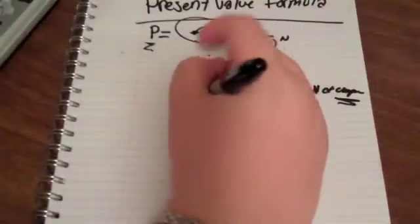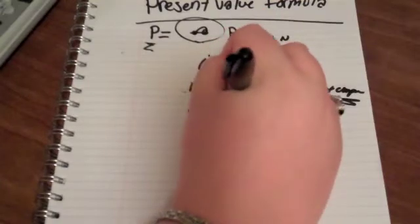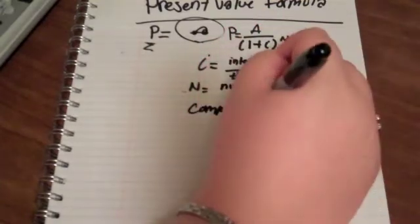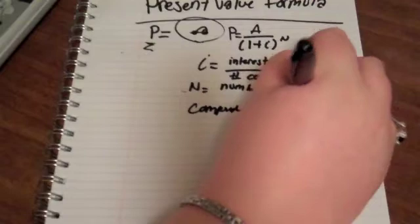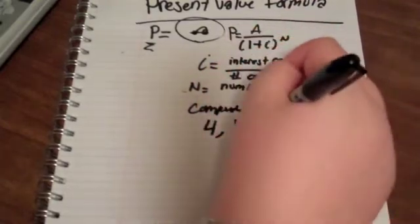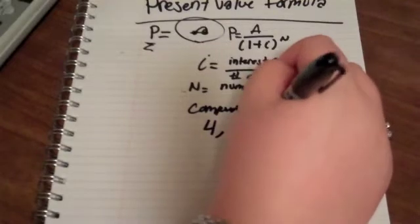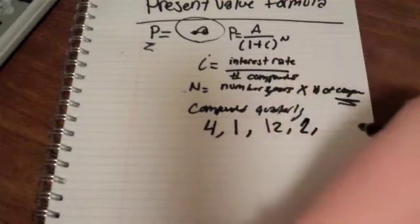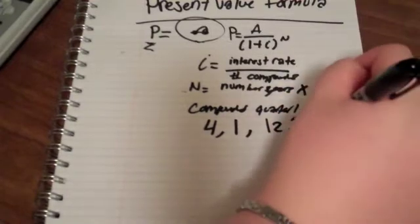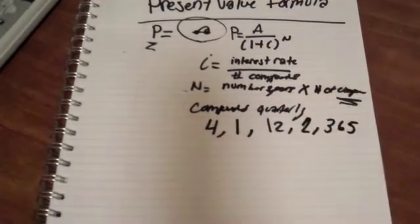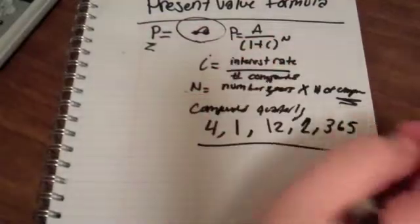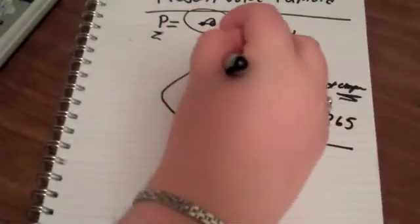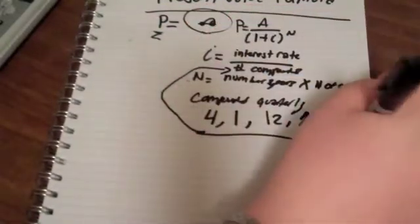So, compounds is what they would tell you. They would say it's either compound quarterly, which would be four. Compounded yearly, which is one. Compounded monthly, which would be 12. Compounded semiannually, which would be two. And compounded daily, which would be 365. And this would be the bottom of your fraction up here. And the number you multiply the number of years by.